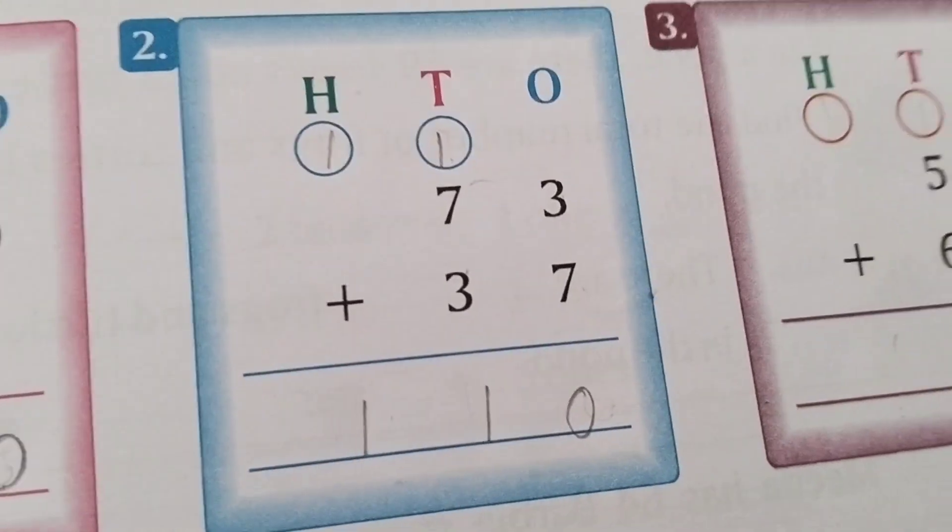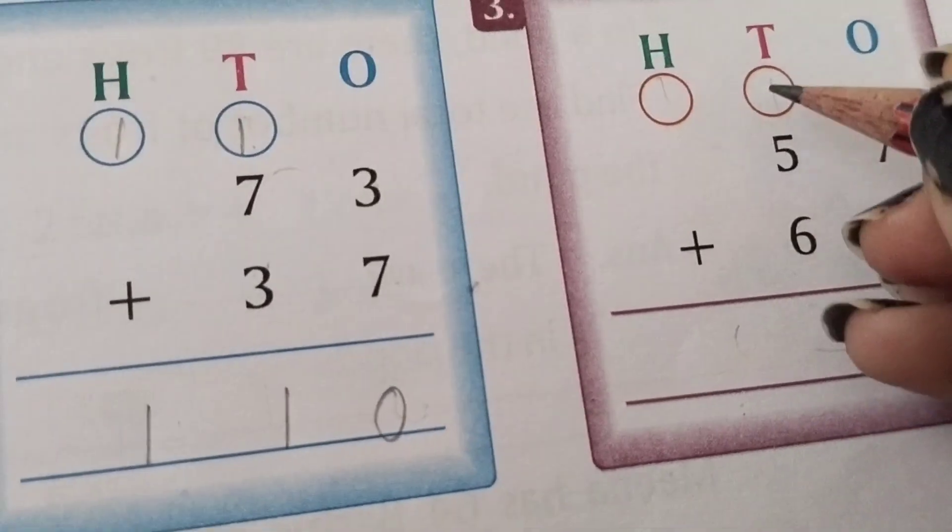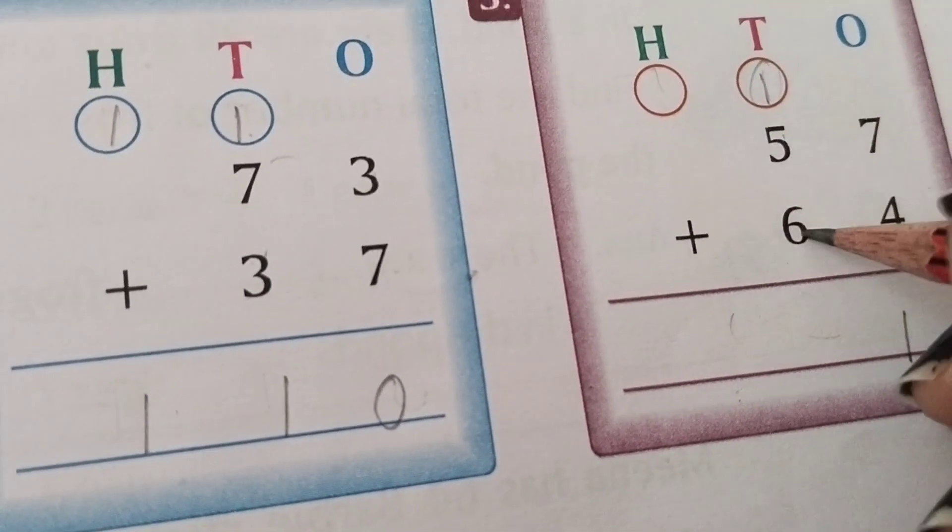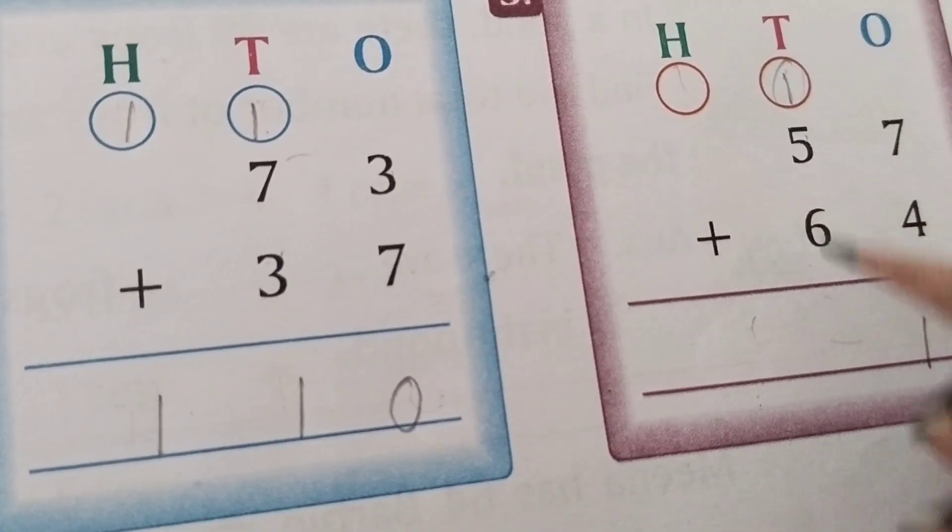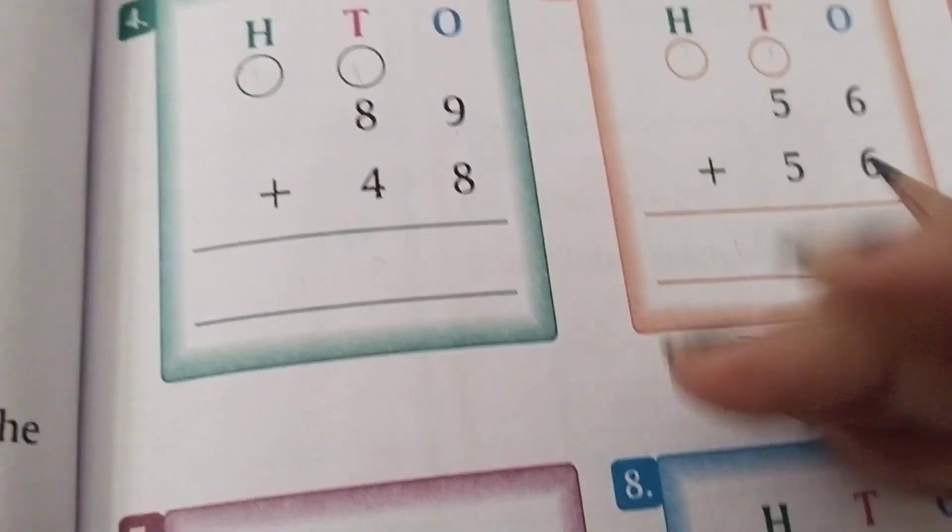Now 7 plus 4 equals 11. We write 1, with 1 carried to the top. Then 5 plus 6 equals 11, plus 1 equals 12. We write 2 here, then 1 here. Next we have 9 plus 8.